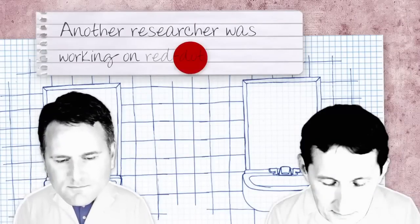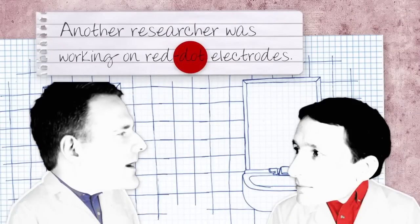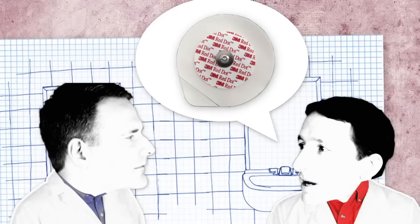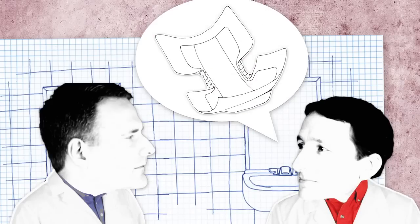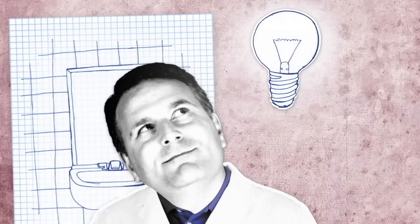Another researcher in the building was working on red-dot electrodes, adhesive pads with gel in them that are placed on skin during electrocardiograms. He was experimenting with various gels to develop a geriatric diaper product. He mentioned they were very water-absorbent. A light bulb appeared. Our scientist had found his growth media.